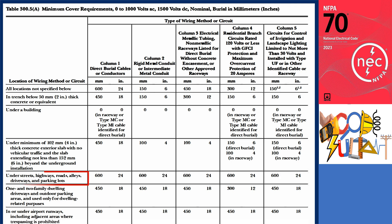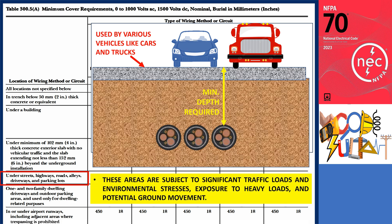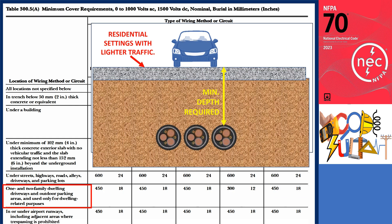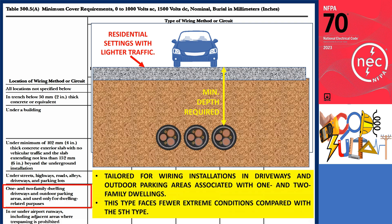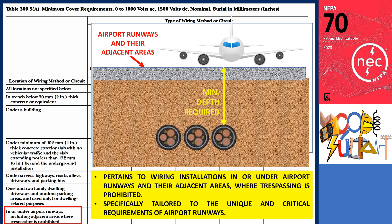The fifth location type encompasses wiring installations beneath streets, highways, roads, alleys, driveways, and parking lots — areas subject to significant traffic loads, environmental stresses, heavy loads, and potential ground movement. The sixth type is specifically tailored for wiring installations in driveways and outdoor parking areas associated with one and two family dwellings, facing fewer extreme conditions than type five. The seventh type pertains to wiring installations in or under airport runways and their adjacent areas where trespassing is prohibited, with specific safety and regulatory implications. Type 7 is tailored to airport runways while type 5 addresses urban traffic scenarios.